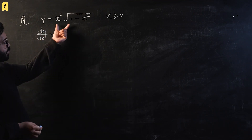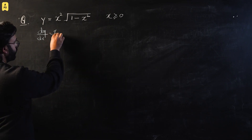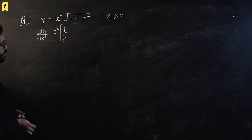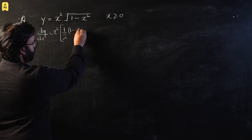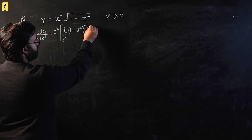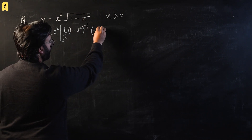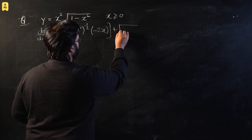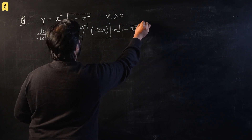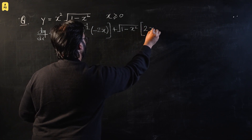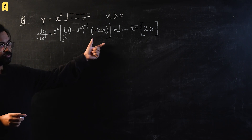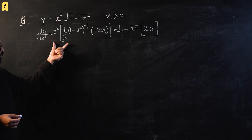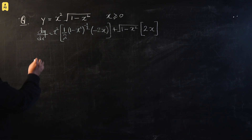For the minimum point we differentiate and set equal to zero. For dy/dx we will use the product rule. Keep x squared as it is, differentiate the square root term: the power comes backwards giving one-half times (one minus x squared) to the power negative one-half, multiplied by the derivative of the inside which is negative 2x. Then add the square root of (one minus x squared) times the derivative of x squared, which is 2x.